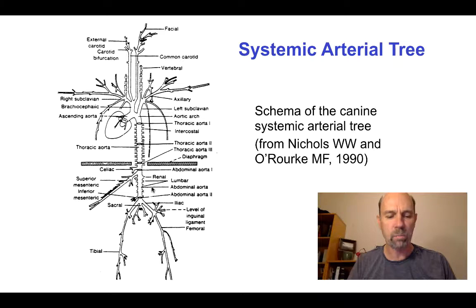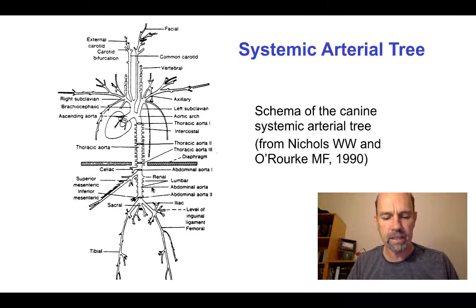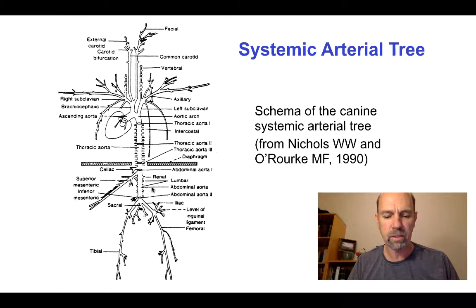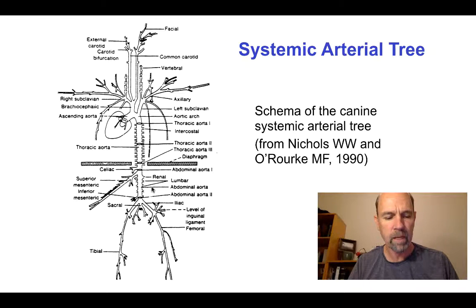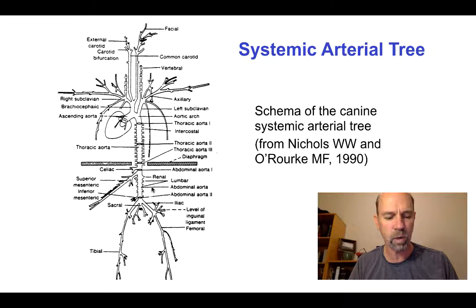As we proceed to daughter branches, the arterial diameter decreases, but the total number of arteries in parallel increases at a greater rate, so that the total cross-sectional area of the arterial network increases with each division until the capillaries are reached. This also means that the average flow velocity decreases from the largest arteries to the smaller branching vessels and arterioles.